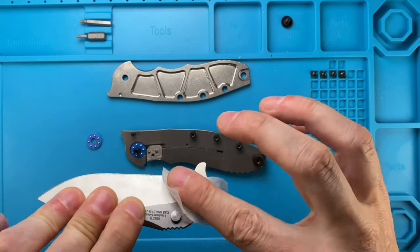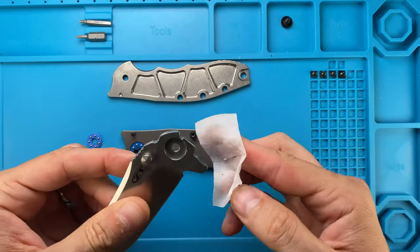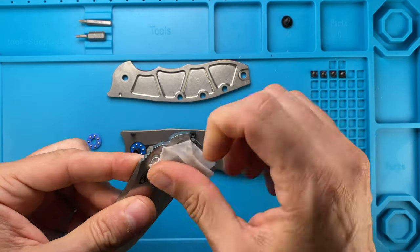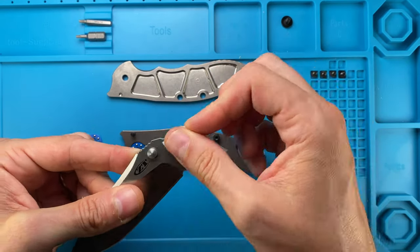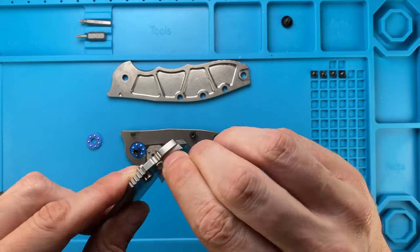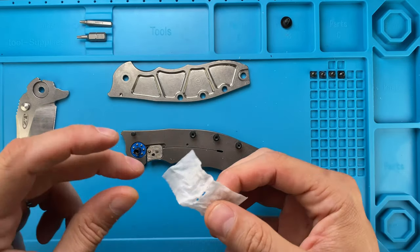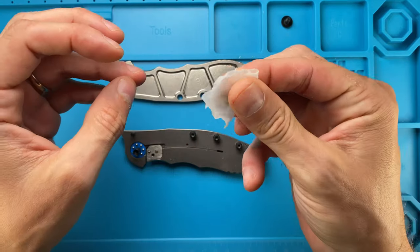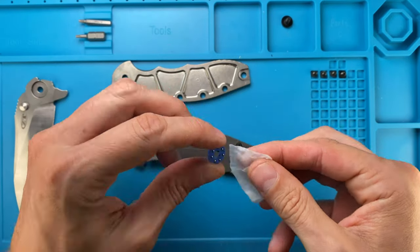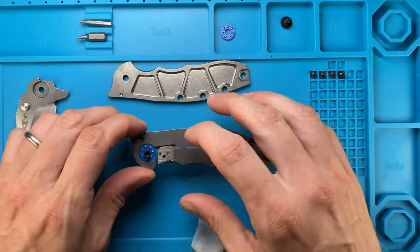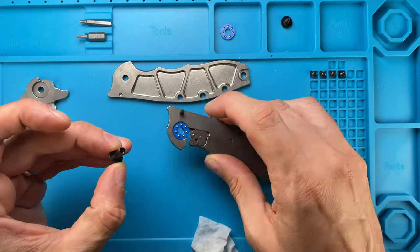Remove the gunk, any excess of grease or whatever was there that had the action not perfect. It was nice but I'm sure we can do better. Just the bearings like that, push the pivot out.